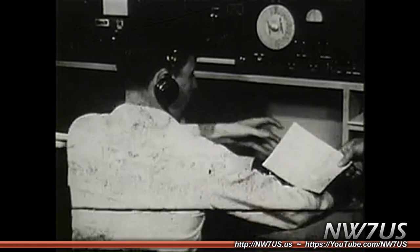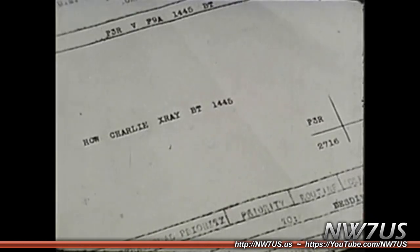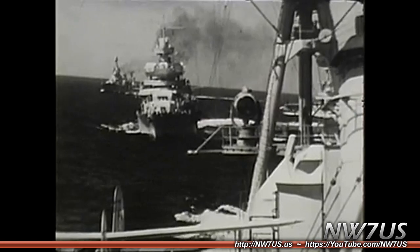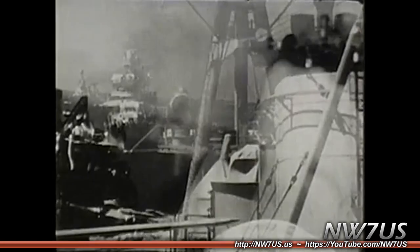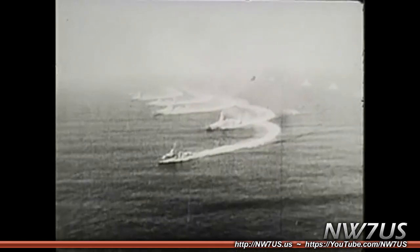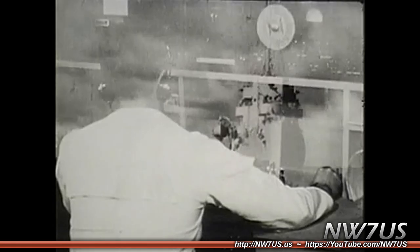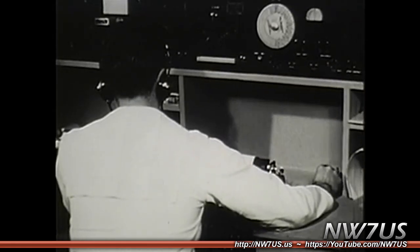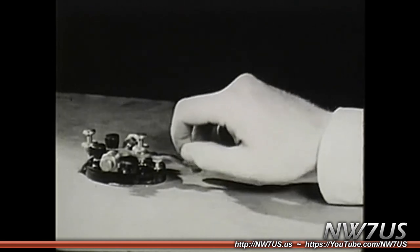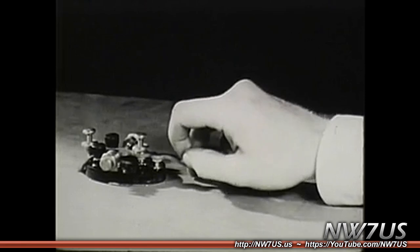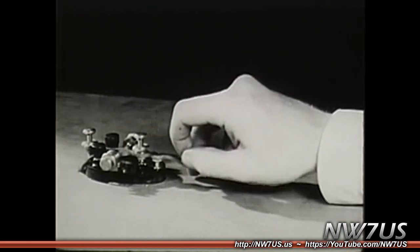A radio man on watch aboard a task force flagship is handed a tactical signal by the communications officer. This is immediately transmitted to the rest of the division. As a result of this signal, the entire task force changes course. The radio man plays an important part in maneuvers. His fighting weapon is the transmission key. Let's take a look at the key and see what makes it tick.